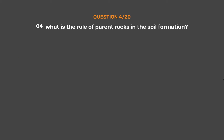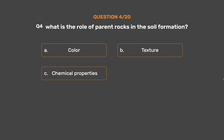Question No. 4. What is the role of parent rocks in soil formation? Option A: Color. Option B: Texture. Option C: Chemical properties. Option D: All of them. The correct answer is Option D: All of them.